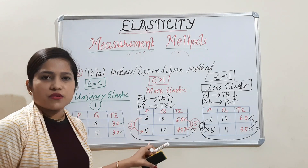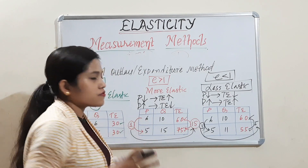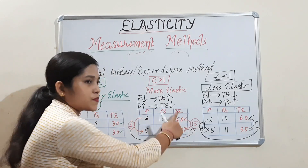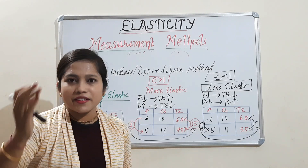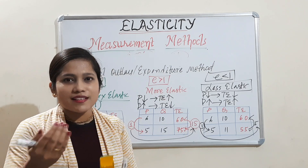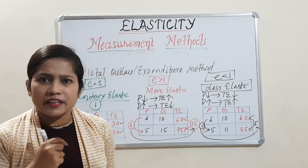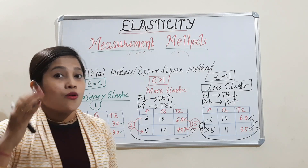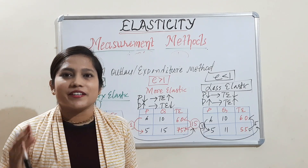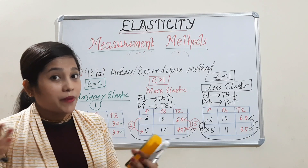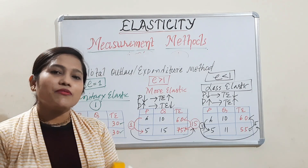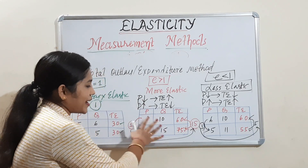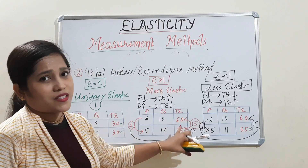More elastic means a small change in price leads to a large change in total expenditure. For example, jewellery: when the jewellery price decreased during the lockdown period from around 8,000 to 5,000 — only a 3,000 decrease in price — women would purchase more and more jewellery, thinking they may not get it at this price in the future. So they go for spending in a larger amount. This is the nature of more elastic goods.